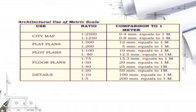In the details, we use the ratios of 1 to 20, 1 to 10, and 1 to 5. The comparison to 1 meter is: for 1 to 20, 50 mm equals 1 meter; for 1 to 10, 100 mm equals 1 meter; and for 1 to 5, 200 mm equals 1 meter.